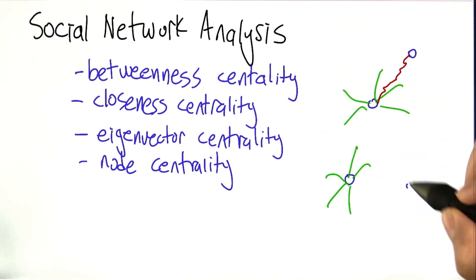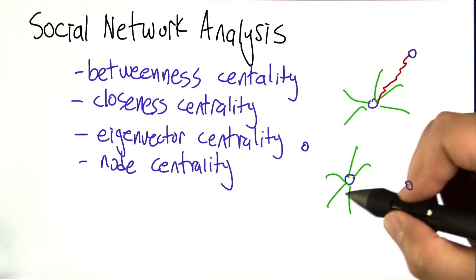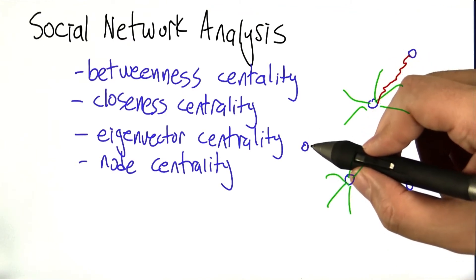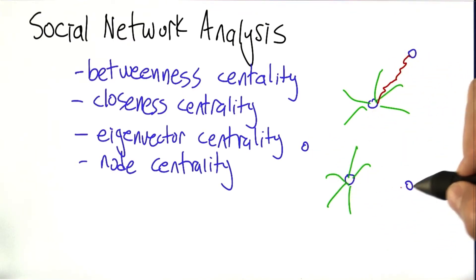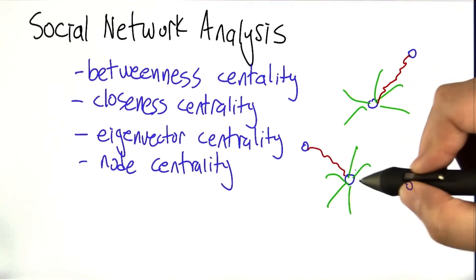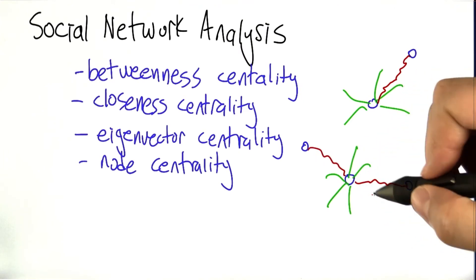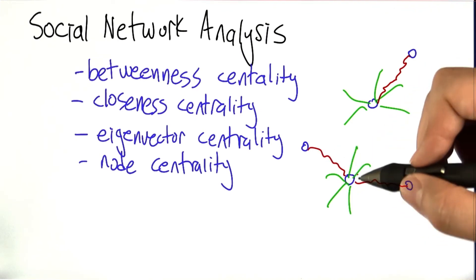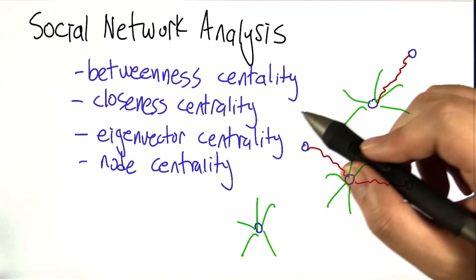Betweenness centrality has to do with the idea that a node is central if most of the shortest paths between arbitrarily chosen pairs of nodes in the network end up having to pass through the node in question. So it's between most of the other nodes. It's kind of stuck between them.